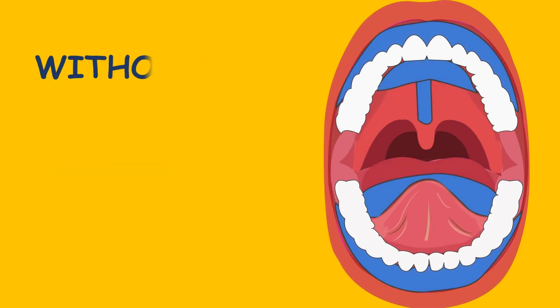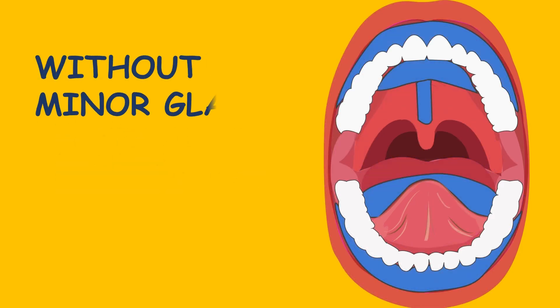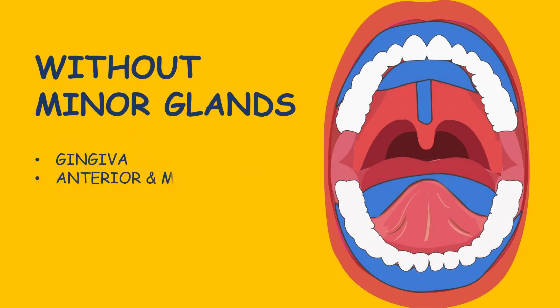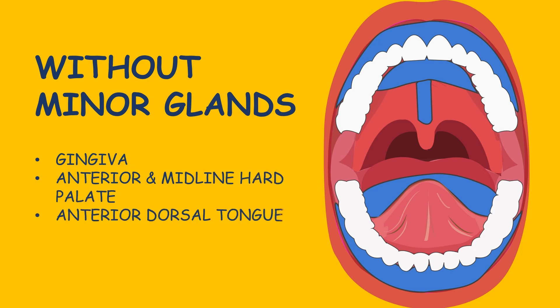The areas devoid of any minor glands include the gingiva, anterior and midline of the hard palate, along with the anterior dorsal tongue.